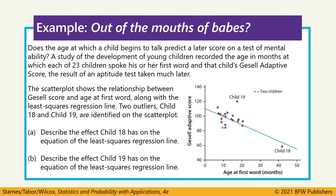In this scatter plot, we have information on 23 children. Our explanatory variable is the age at which these children spoke their first word, and we want to see if that's predictive of their eventual Gessel adaptive score, taken later in life. Each purple point indicates one child. The two red dots represent two children — child 18 and child 19 — who are both outliers in that they don't fit the overall pattern. We're being asked how those two children affect the least squares regression line.